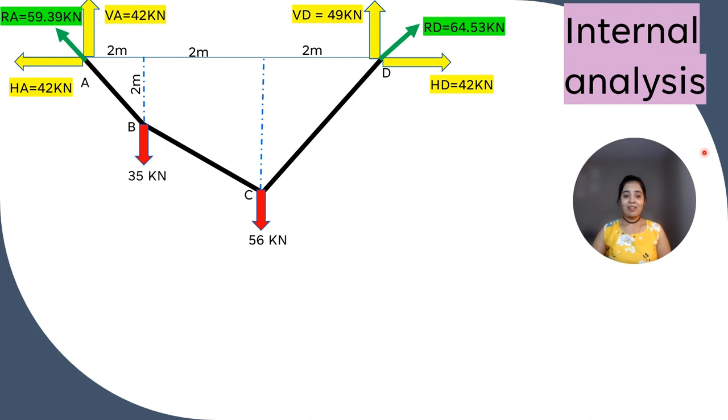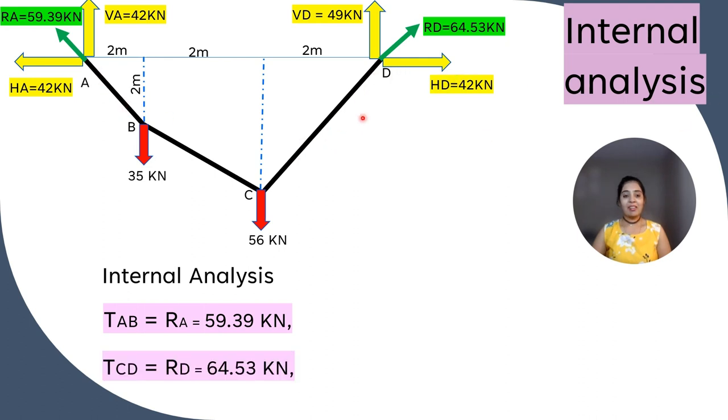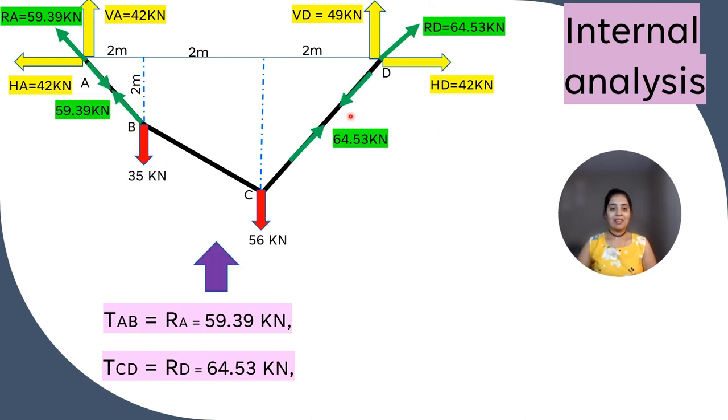Let's do the internal analysis. TAB is RA equals 59.39 kN, so TAB equals 59.39 kN. I already told because RA is collinear with AB. And TCD equals RD equals 64.53 kN. Why? Because they are equal and opposite and also collinear. We have shown these forces, internal forces in the segment AB, tensile force 59.39 kN and tensile force of 64.53 kN in segment CD.